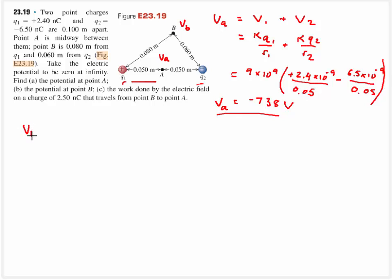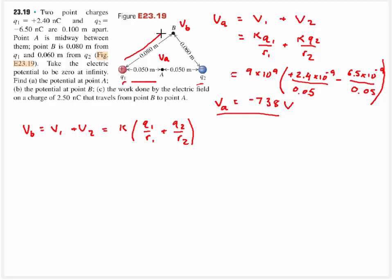Now we do the same thing for point B. The voltage at B is going to be equal to the voltage due to charge 1 plus the voltage due to charge 2. That equals K times charge 1 divided by radius 1, plus charge 2 divided by radius 2, with K pulled out explicitly. That gives us 9 times 10 to the 9th as our K value.